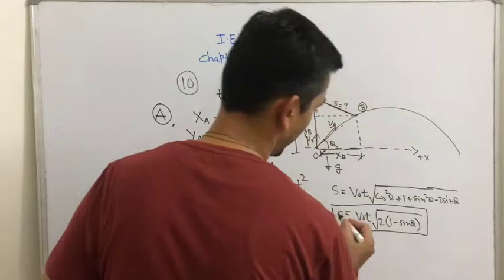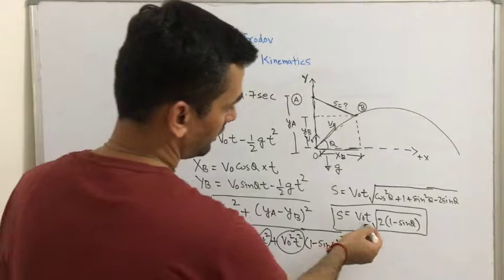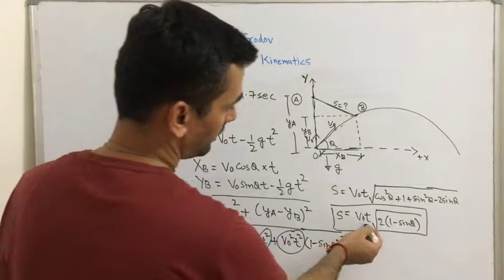This is the distance between the point at any instant after the throw. So now if you plug in the values of V0, t and theta, you should be able to find out the distance between the two bodies.